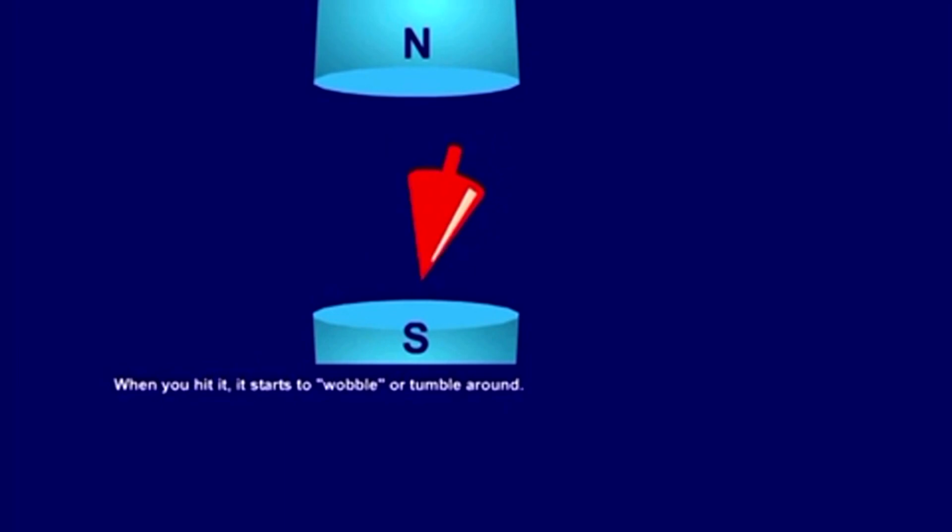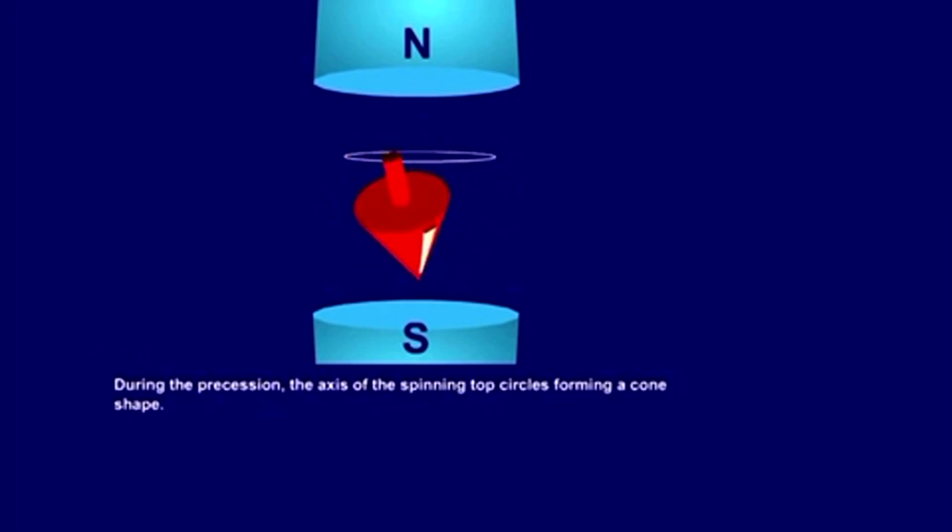During the precession, the axis of the spinning top circles, forming a cone shape. Protons, in a strong magnetic field, also show this wobbling type of motion, which is called precession.